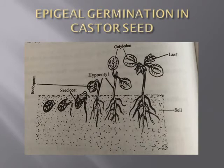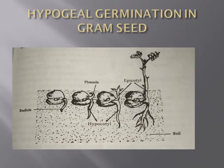In epigeal germination, as seen in castor seeds, the hypocotyl elongates, pushing the cotyledons upwards. The cotyledons come above the soil surface and you can see new leaves germinating.